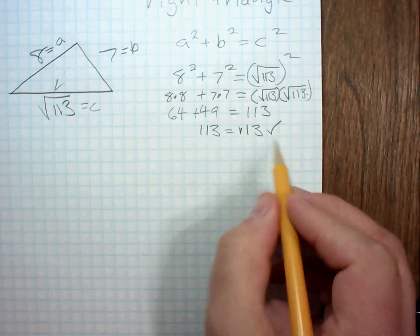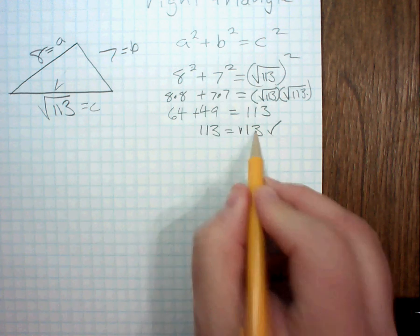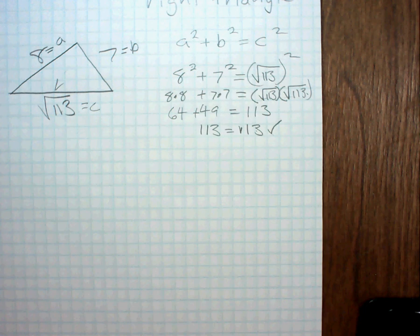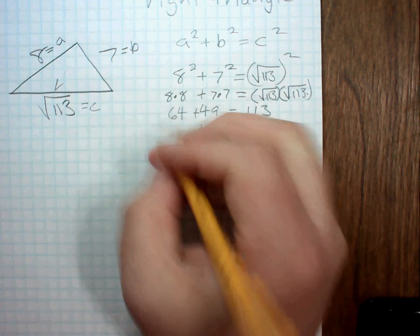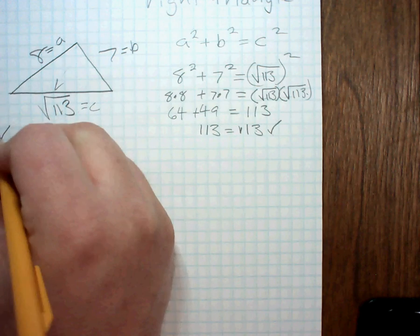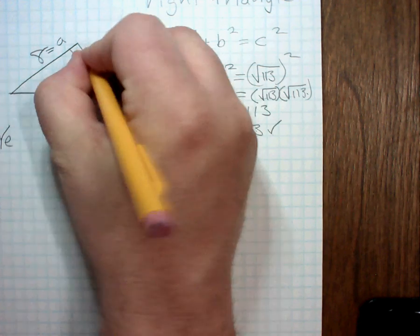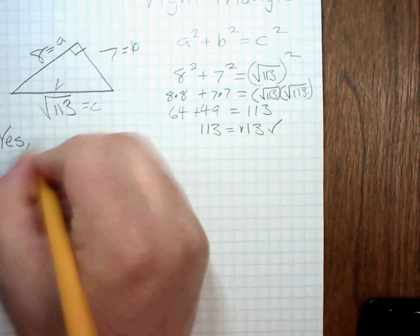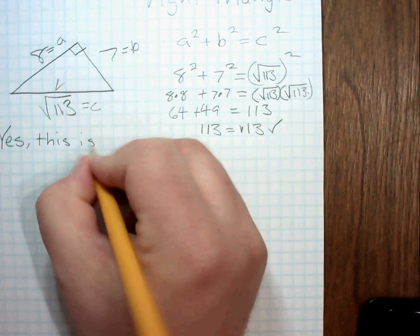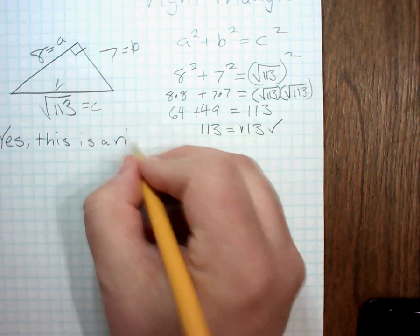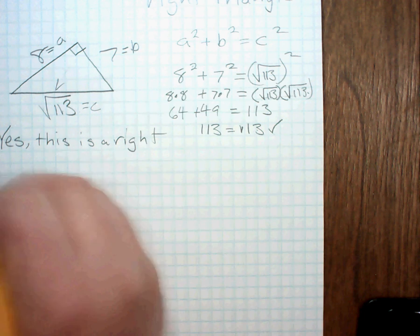So, because this checks out, because the left-hand side equals the right-hand side, yeah, it's a right triangle. So, yes, in other words, this is a right triangle.